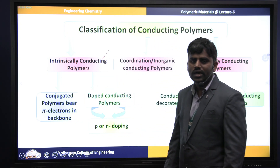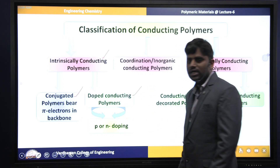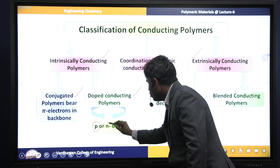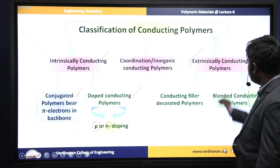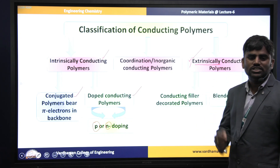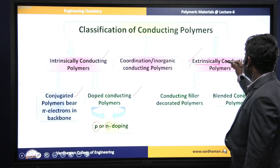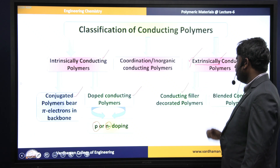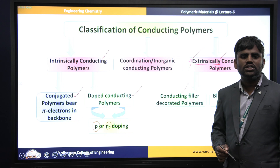Intrinsic conducting polymers are again classified into two types: conjugated conducting polymers, and doping conducting polymers. Doping conducting polymers are again classified into two types: p-doping and n-doping conducting polymers. The second classification is extrinsic conducting polymers, where the polymers exhibit conductance by adding some external conducting substance. Extrinsic conducting polymers are classified into two types: conducting filler element polymers and blended conducting polymers.